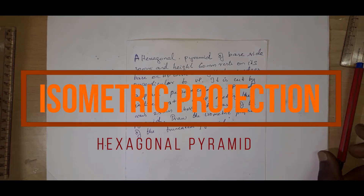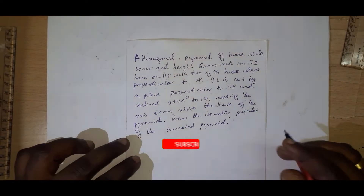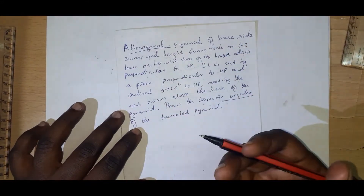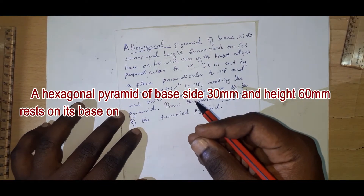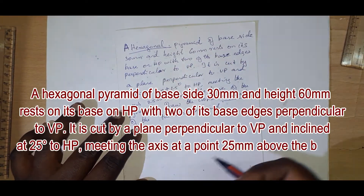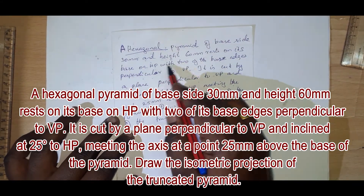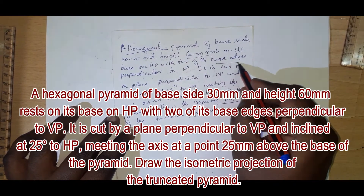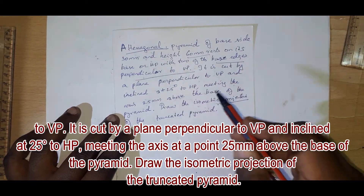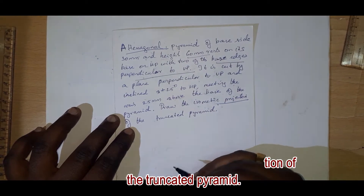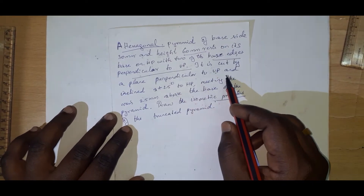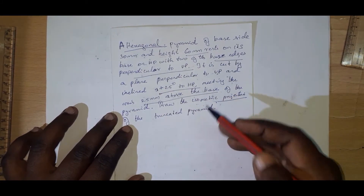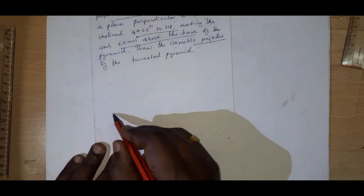In this video we are going to see a hexagonal pyramid with isometric projection. Since this is a hexagonal pyramid, the base has six sides ending at an apex. The base side is 30mm and axis height is 60mm, resting on its base on HP. It is cut by a plane perpendicular to VP and inclined at 25 degrees to HP, meeting the axis 25mm above the base.